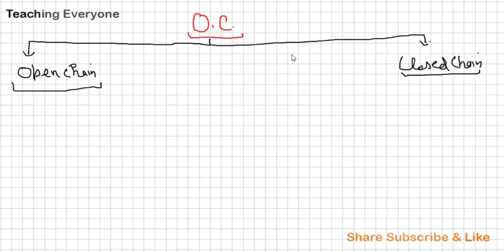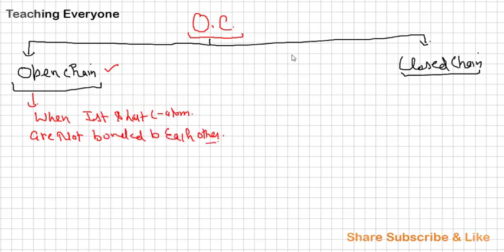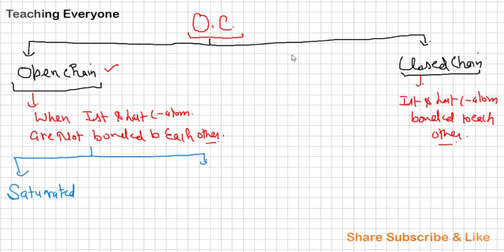What are open chain compounds? When first and last carbon atoms are not bonded to each other. Now open chain compounds again are of two types: saturated and unsaturated.